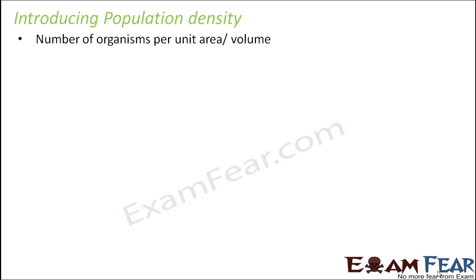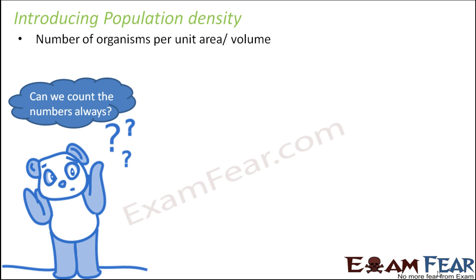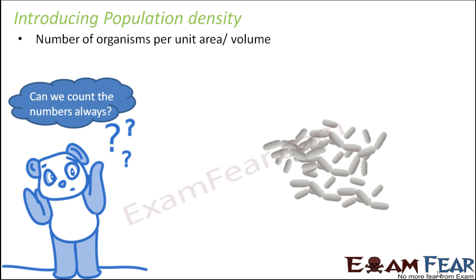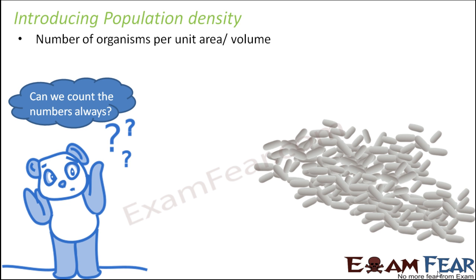Bacteria multiply very fast, so it is not possible to count the numbers always — every second thousands of new bacteria are formed. So what is done is we calculate the total number of bacteria for a small area and define the number of bacteria per unit area. Since we know the total area of the culture dish, we can calculate the total population. Another alternative is to express population density in percentage volume as well, depending upon where you want to know the population.